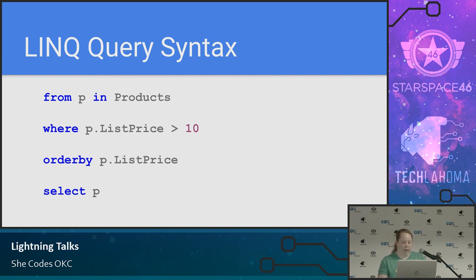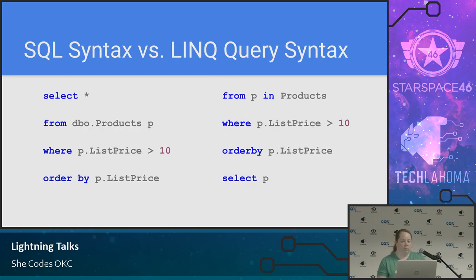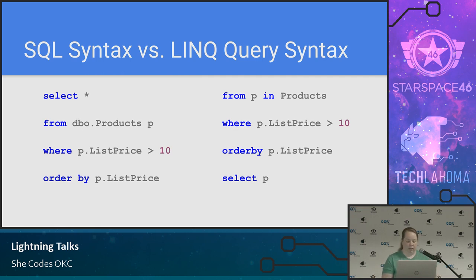ORDER BY is one word here. And then we're selecting some things — here I'm just selecting basically star, selecting the products. Comparing those side by side, they're almost identical — just the order, with the SELECT part at the end where I feel like it makes more sense anyway. Still the same pieces, just slightly different syntax.